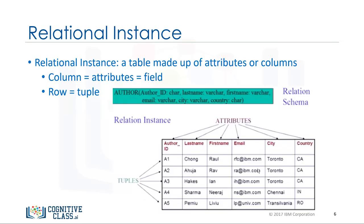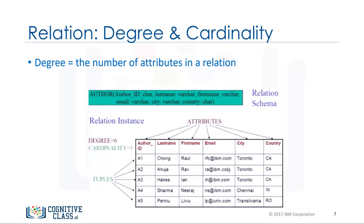A relational instance is a table made up of the attributes or columns and the tuples or rows. The columns are the attributes or fields. The rows are tuples. Degree refers to the number of attributes or columns in a relation. Cardinality refers to the number of tuples or rows.